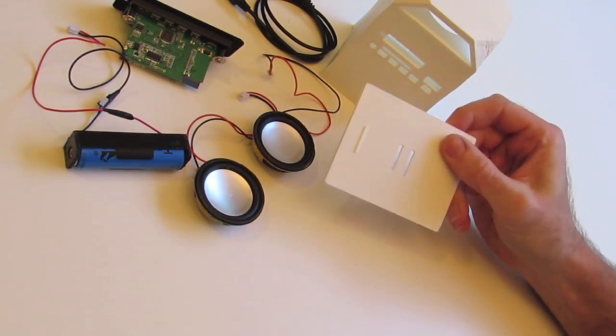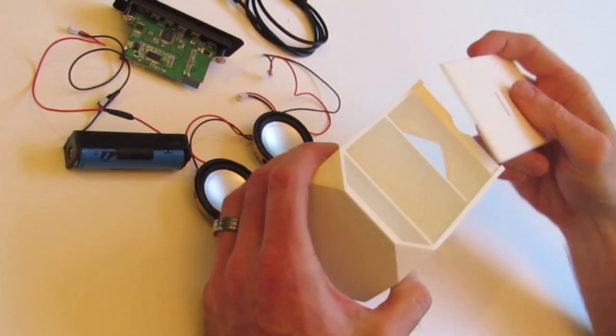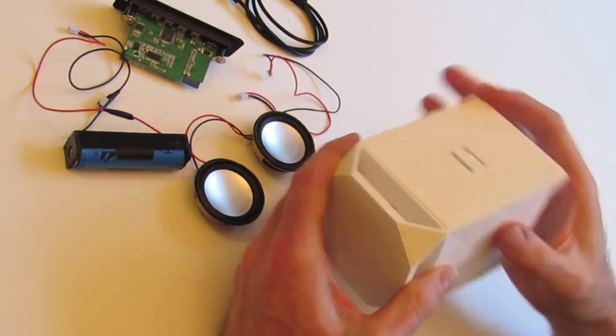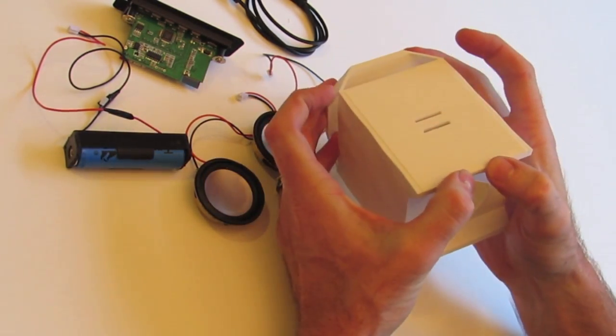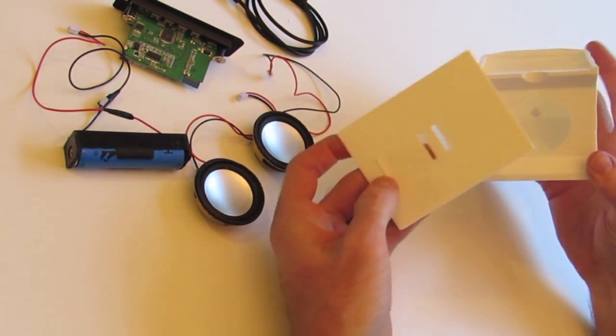And secondly, this is just our little rear cover, again, very easy to print, no support material. And that just slides on the back here, and you push it to clip it in. Just take it out, lift and pull back, as you have a little clip here.